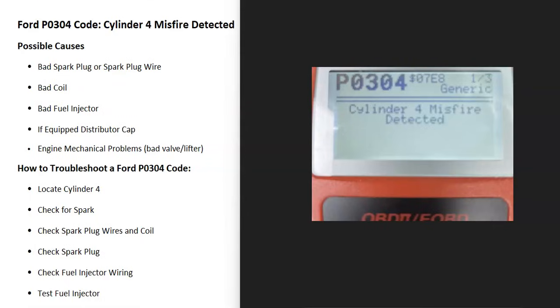Today I'm talking about a Ford with the P0304 code — what it is and how you go about fixing it. A Ford P0304 code is a cylinder four misfire detected.